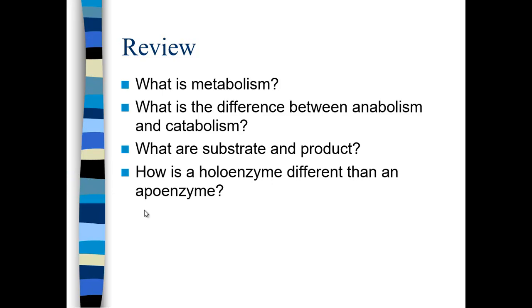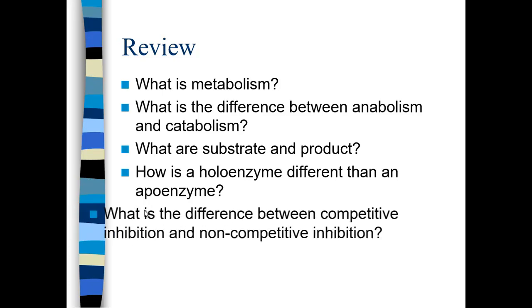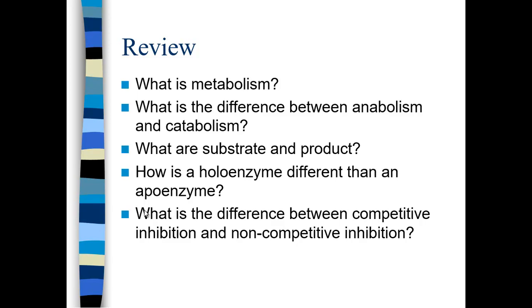How is a holoenzyme different from an apoenzyme? A holoenzyme is 'whole' — it includes all of its cofactors. An apoenzyme is not whole; it has none of its cofactors. The holoenzyme with its cofactors is much more stable than the apoenzyme. Competitive inhibition occurs when the inhibitor and the substrate compete for the same active site on the enzyme. In noncompetitive inhibition, there's an additional regulatory site, and when an inhibitor interacts with it, that prevents the substrate from binding the active site.